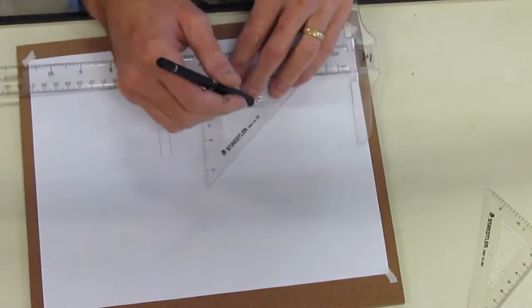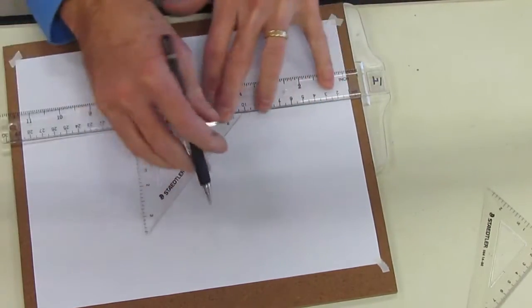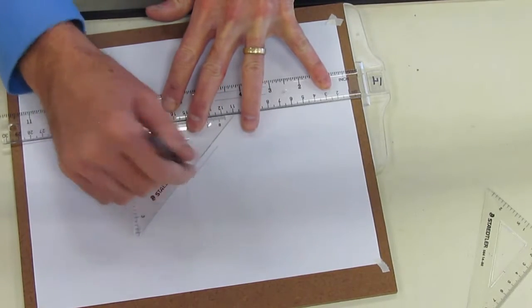Or, I could do a 45, again using my t-square and my triangle. I can make a 45-degree line and make another 45-degree line parallel.